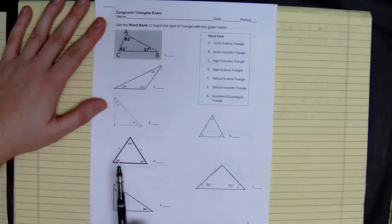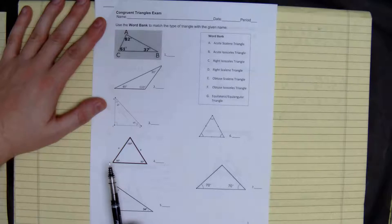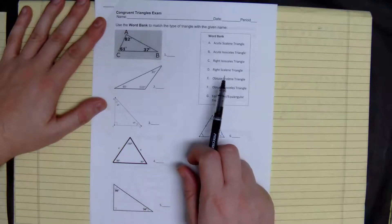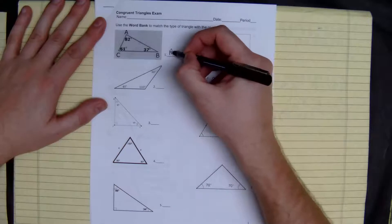So right here, all the angles are different and also less than 90. So it looks like this is going to be an acute scalene triangle. So this is A.